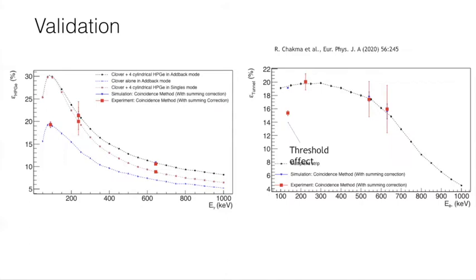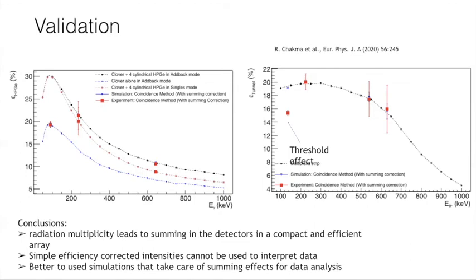When no add-back was considered, we also see agreement with the experimental values. From this study I concluded that even with only two cascades the summing effects were problematic to track. If we have a larger cascade, the summing effects in a compact and efficient array like GABRIELA become a bigger problem. That is why it is better to use simulations to take care of the summing effects automatically for the data analysis.